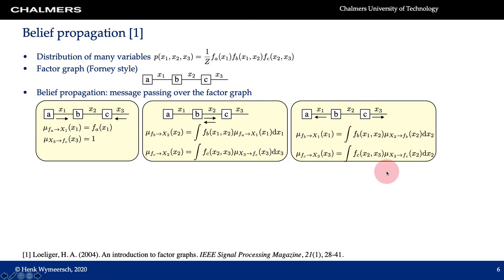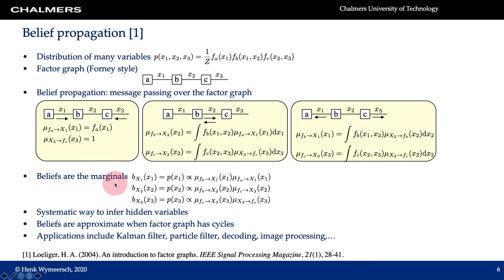Finally we compute messages from fb to x1 and from fc to x3 following the same rules. After this third time step, on each edge we have two messages — one from left to right and one from right to left. Given these messages we can compute so-called beliefs for x1, x2, and x3. These beliefs are simply the marginals of the original distribution: p(x1) is obtained by integrating out everything except x1, and this belief equals the product of the two messages on the corresponding edge. It can be shown that these beliefs are exact when the graph has no cycles; when there are cycles, the beliefs are only approximations.